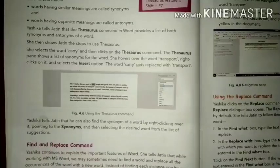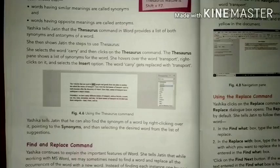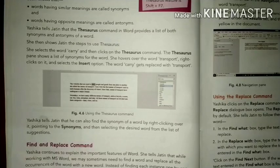Yashika tells Jatin that he can also find synonyms of a word by right-clicking it, pointing to Synonyms, and selecting the desired word from the list. The Thesaurus command provides synonyms and antonyms of a word. When you click the Thesaurus command, it provides a list of synonyms and antonyms. You can choose a synonym and insert it to replace your original word.